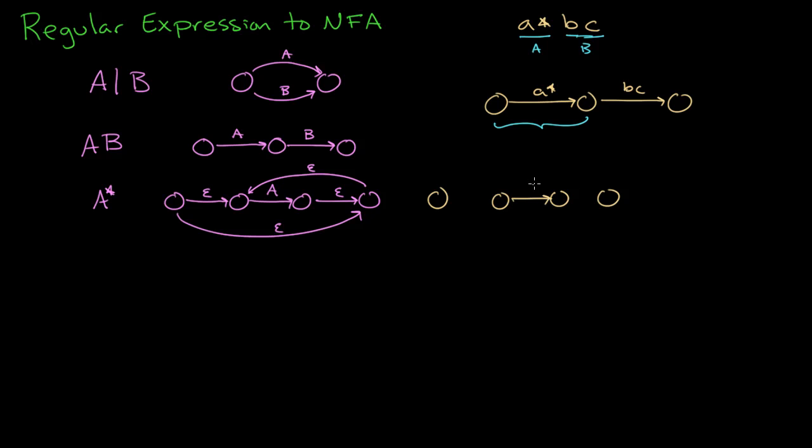The A goes in the middle. Epsilon here, epsilon here, epsilon all the way across. And then one coming back. And then the B C becomes two states, B C. And then finally, here's our starting, and here's our accepting. So this here is the solution for A star, B C.